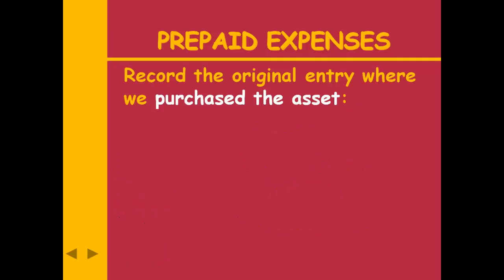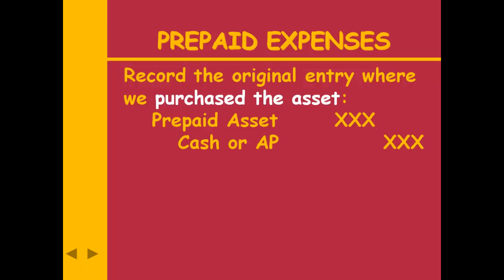When we buy the item — be it prepaid rent, prepaid insurance, or supplies — we're going to debit the asset account and credit cash or perhaps accounts payable.